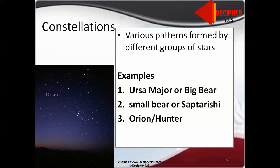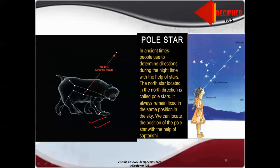Now we come to the constellations. Constellations are various patterns formed by different groups of stars. Three examples are Ursa Major or Big Bear, Small Bear or Saptarishi, and third one is Orion or Hunter. These are the names which have been given because they approximately look like the shapes of these. Saptarishi means seven sages. Ursa Major has also been given the name Big Bear because it looks like bear. And this one is given the name Orion because it looks like a hunter in the mythology.